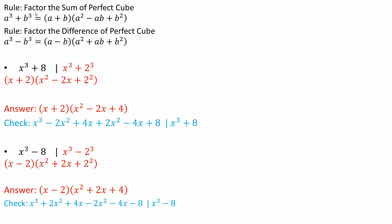We can write x cubed plus 8 as x cubed plus 2 cubed, so we use the sum of perfect cubes formula and get (x + 2)(x² - 2x + 2²). Then 2 squared becomes 4, giving us (x + 2)(x² - 2x + 4). We can always check this.